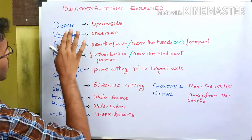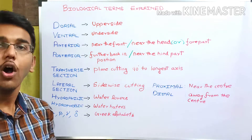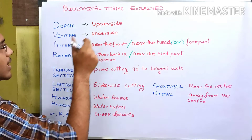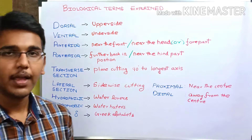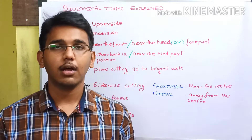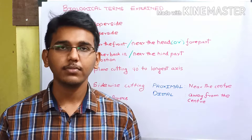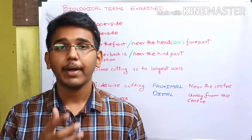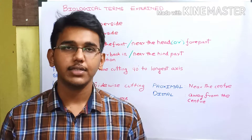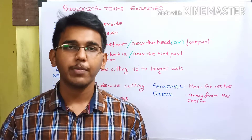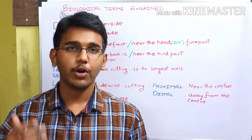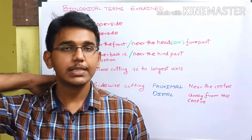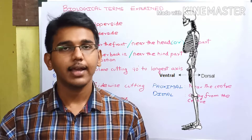First we have the biological terms dorsal and ventral. These two terms are opposite to each other in meaning. Dorsal means upper side and ventral means underside. Consider a body lying face-down on the ground — the backside facing up is the dorsal side, and the side touching the ground is the ventral side.